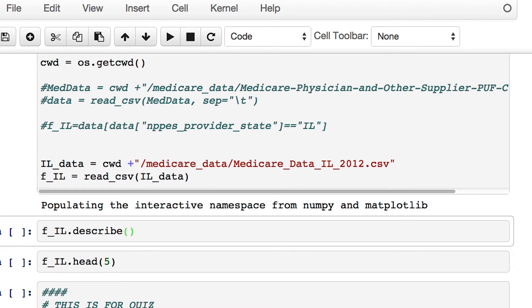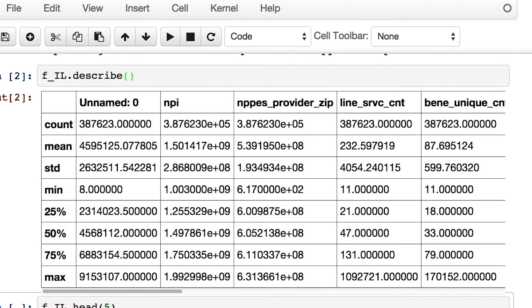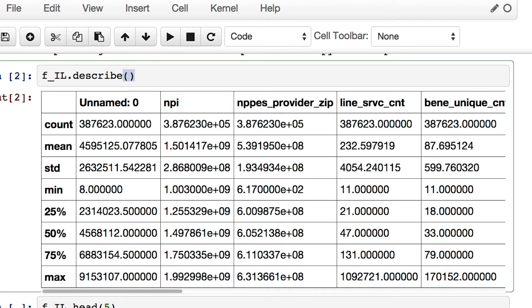The f_IL is the pandas data frame. We can use the describe function to look at a summary of this data. Let's run this piece of code. Once this finishes running, you should have a table that looks like this. The total number of events we have in the data frame is 387,623. You can slide this bar here to look at the rest of the table.